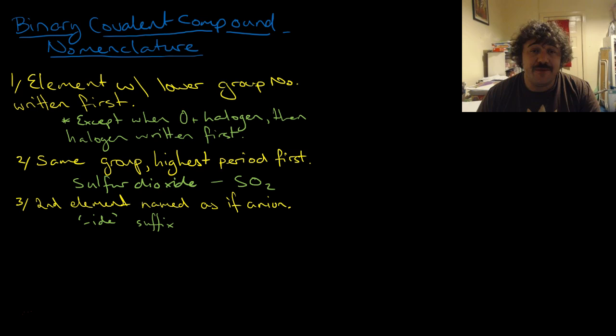Now, the element in the lower groups with the lower group number is written first, and this is except, the exception there is when oxygen and a halogen. In that case, you write the halogen first. So the element with the lower group number, that's the, so on our periodic tables, you know, like your grid, group numbers are the ones that are going down that way. Periods are the rows. Okay, so the column is the lowest column number. You write that first with the exception of oxygen and a halogen. In that case, you write the halogen first.